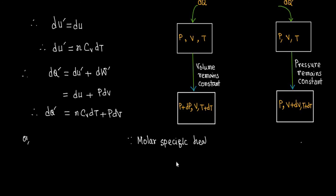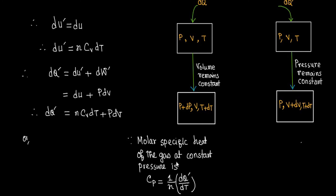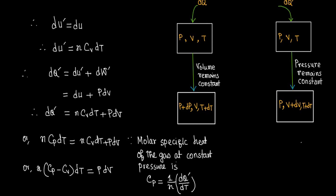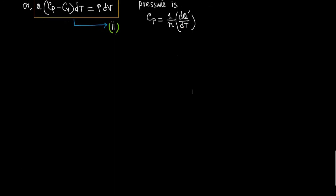Since the molar specific heat of the gas at constant pressure is given by Cp equals (1/n)(dQ prime/dT), we can write nCp dT equals nCv dT plus p dV, or n(Cp minus Cv) dT equals p dV, which is equation 2.